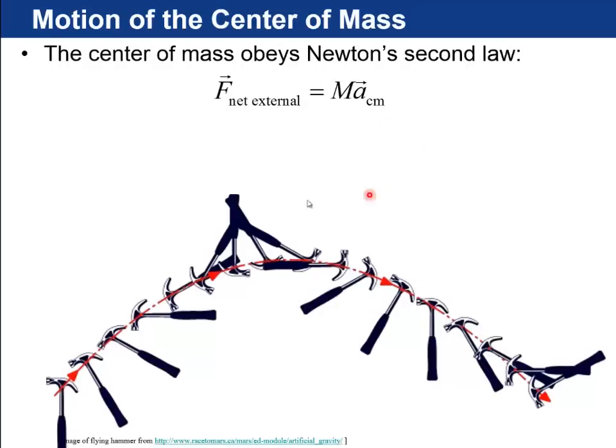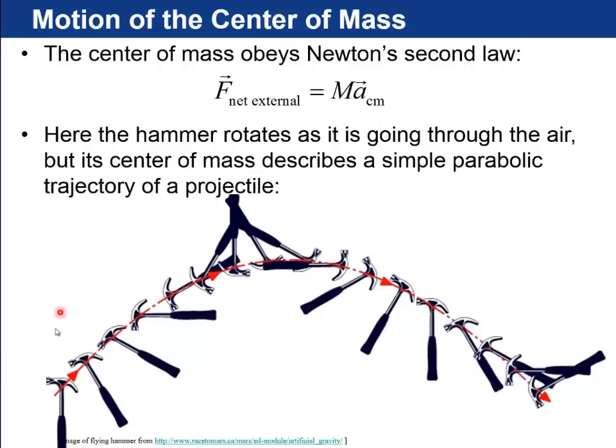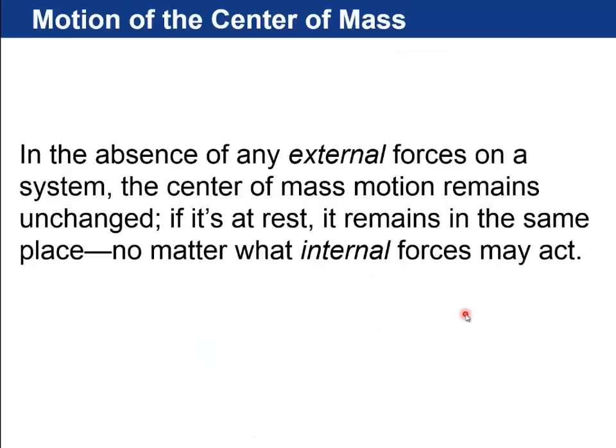So the idea here is the center of mass obeys Newton's second law. So whatever the net external force is, it's the total mass of the object times acceleration of the center of mass. So here we have some complex, it's a hammer rotating, so you've got a lot of internal forces holding the hammer together. But its center of mass just follows this red line, which is just that same nice parabola that we have figured out in previous chapters. So in the absence of any external forces on a system, if there is no gravity, then the center of mass remains unchanged. If it's at rest, it remains at rest. Or if it's going in constant velocity in a straight line, it will continue doing that, no matter what the internal forces are inside that object. And that's a useful way of solving some problems.